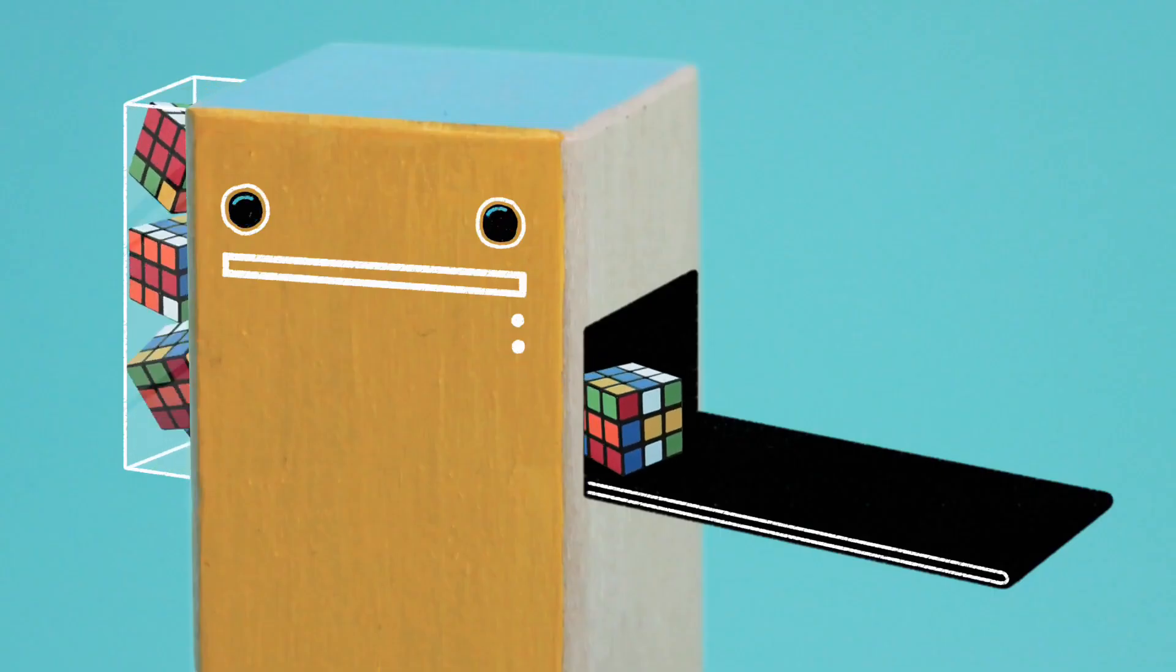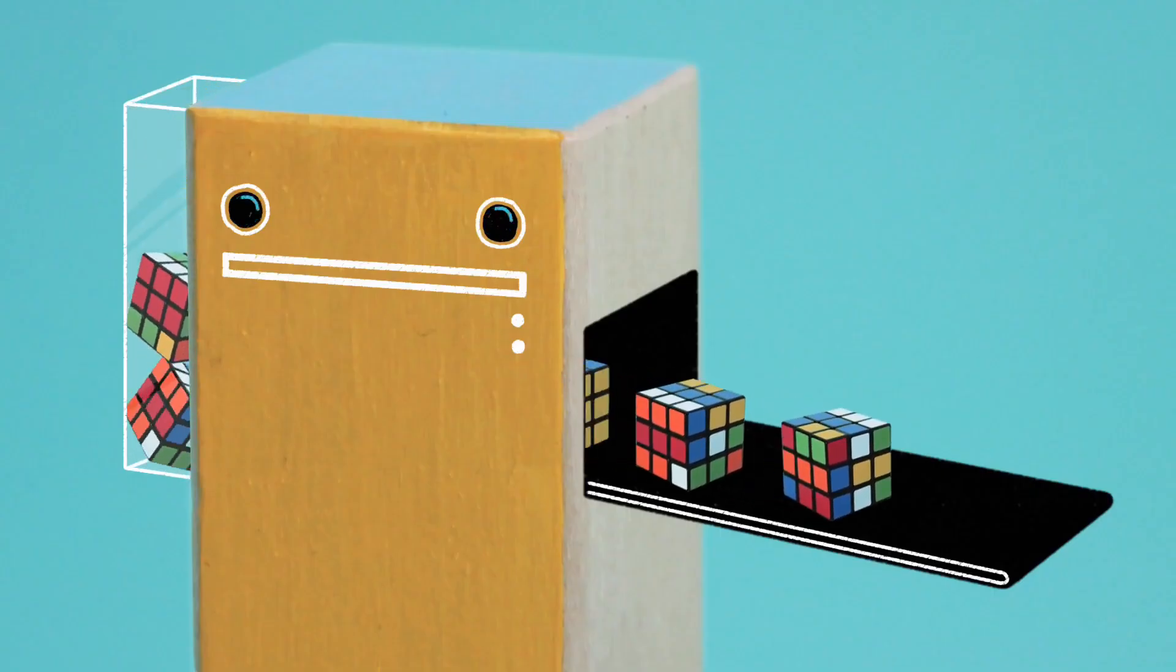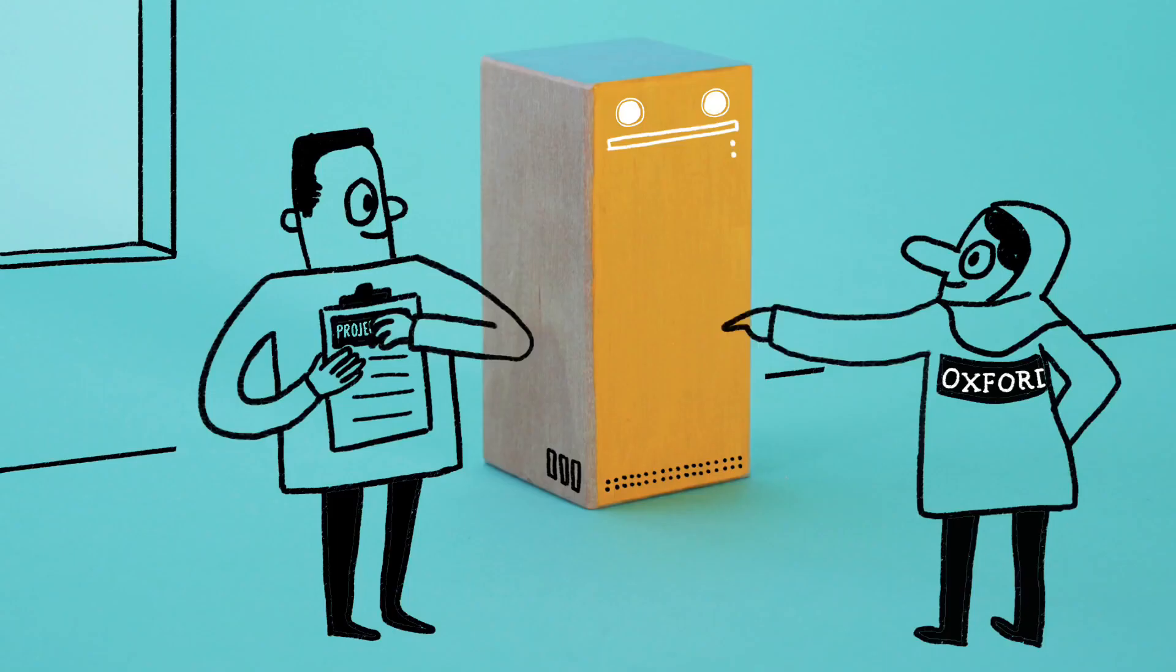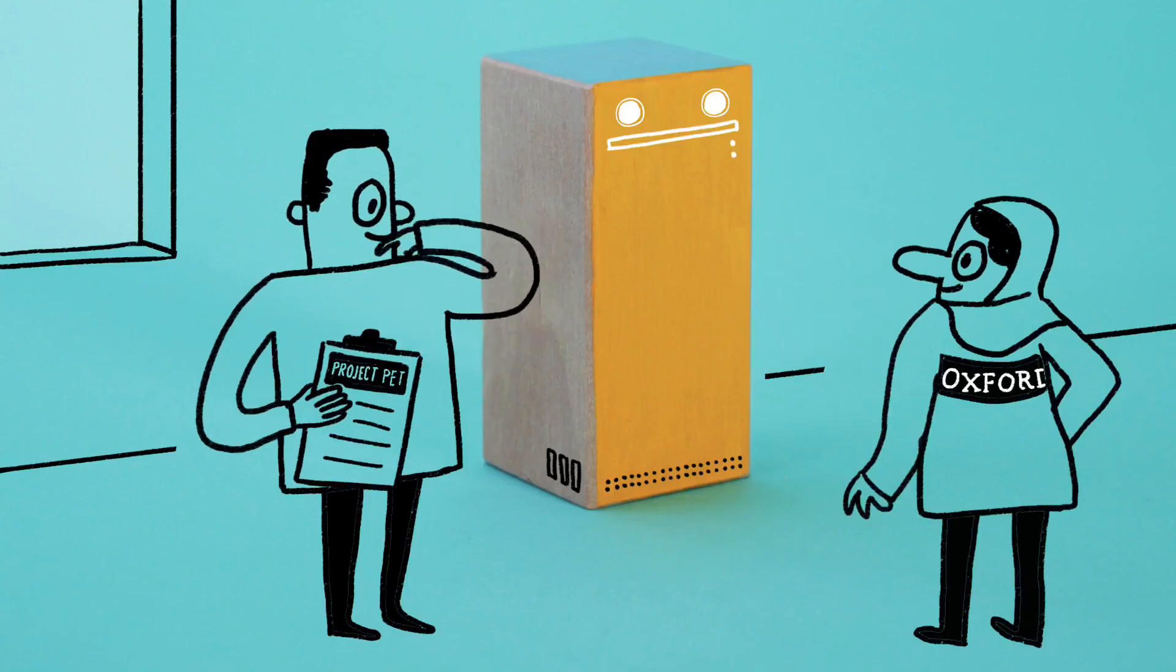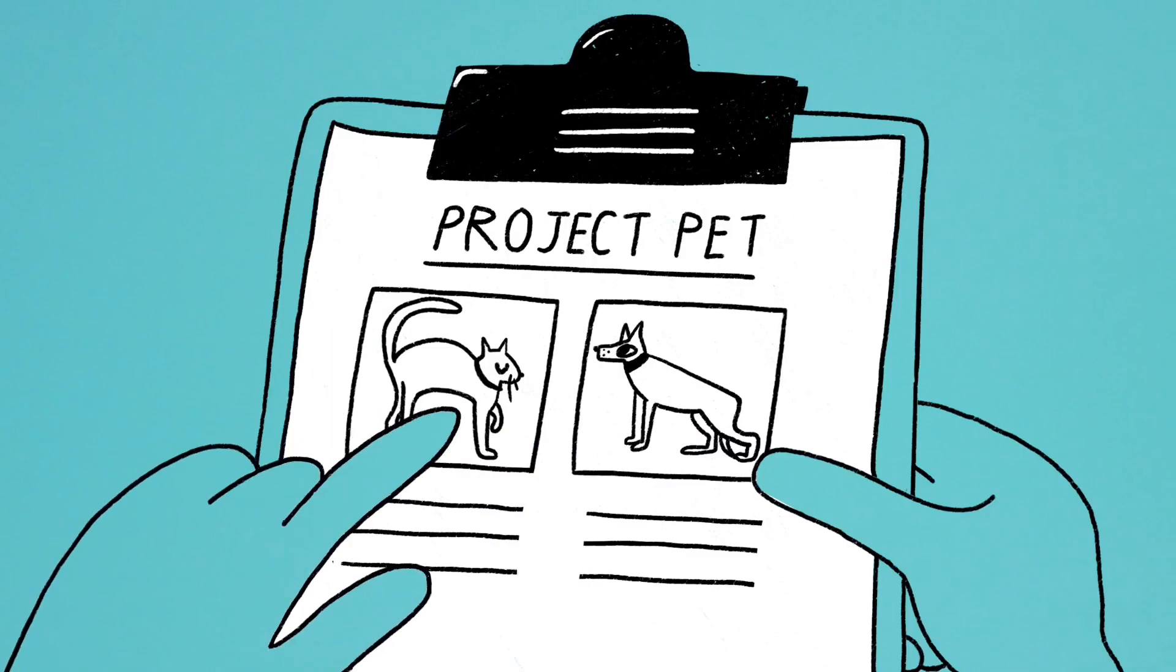Just as your brain uses experience to improve at a task, so can computers. Say you need a computer that can tell the difference between a picture of a dog and a picture of a cat.